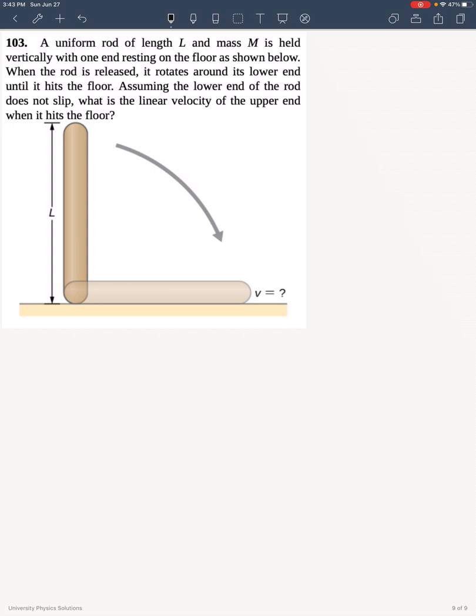When the rod is released, it rotates around its lower end until it hits the floor. Assuming the lower end of the rod does not slip, what is the linear velocity of the upper end when it hits the floor?